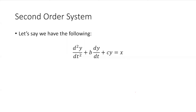I want to pick up where I ended last time, which is to look at second order systems. So if I had a second order system, I can discretize that as well. To do that, we use something called state space analysis, which I'm going to talk about here — essentially turning this into a system with two equations.